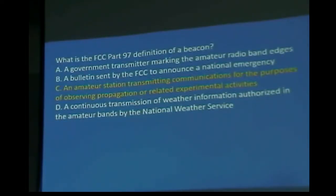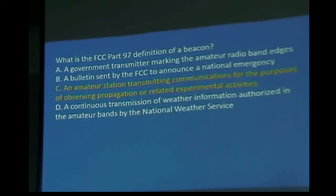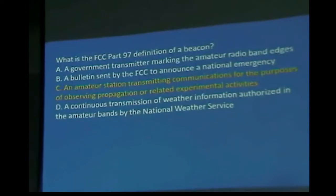What is the FCC Part 97 definition of a beacon? Part 97 is the amateur radio rulebook — about an eighth of an inch thick. A beacon is an amateur station transmitting communications for the purposes of observing propagation or related experimental activities. We'd put up a low-power transmitter that periodically gives its call sign; we can then monitor from around the area to see where we can hear it and study propagation.